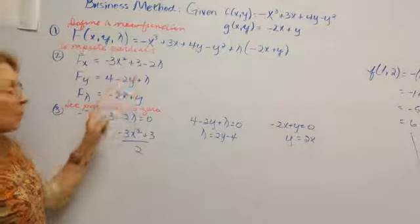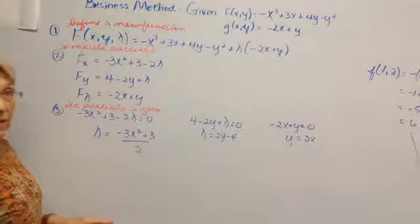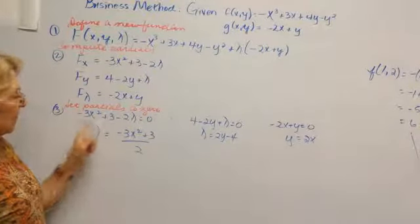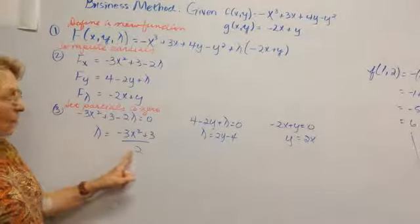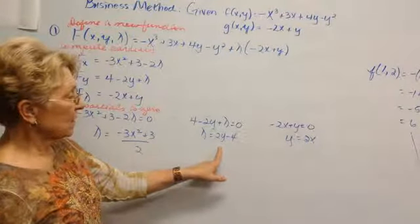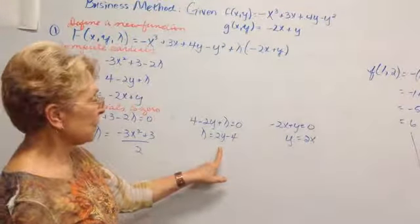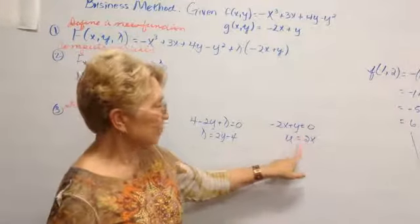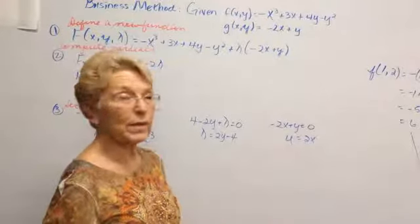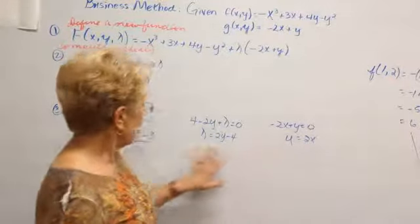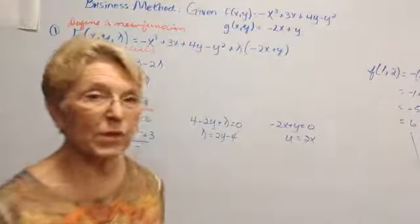Then you take each of the partials and set them equal to 0 and try to dig out some valuable information. Like here, we found that this is what lambda is equal to. Over here we found out this is what lambda is equal to. And then solving the last partial, we found y equals 2x, a relationship that we'll certainly use. So then to work on the algebra here, I'm going to show you another board.